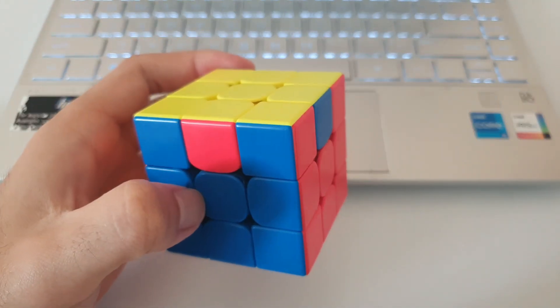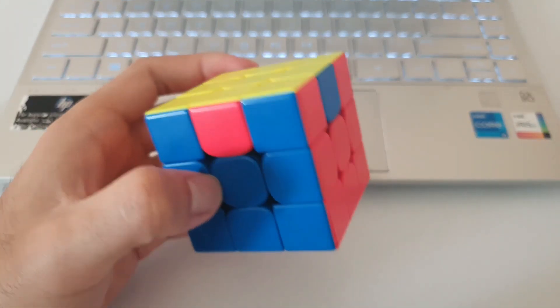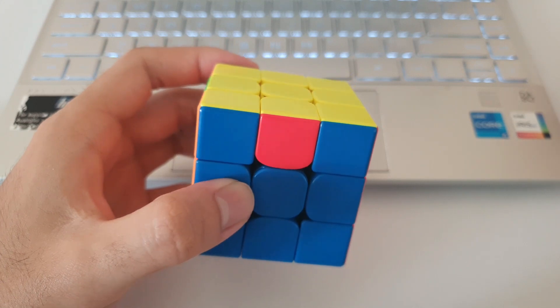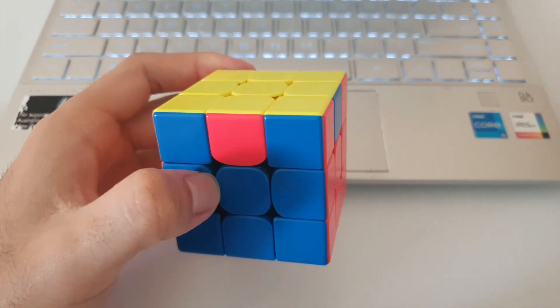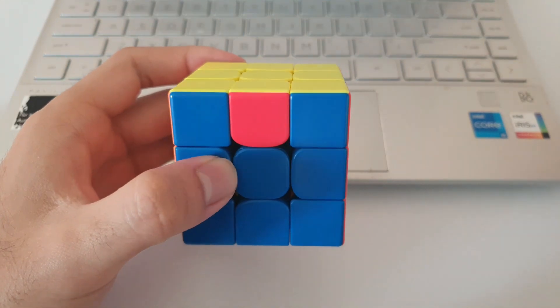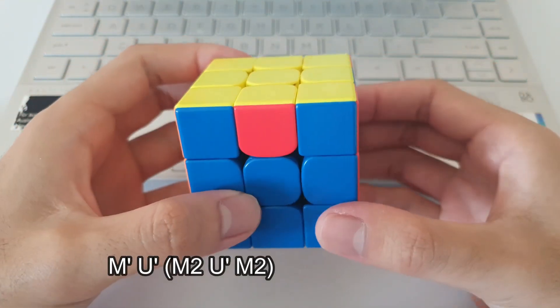Alright, so today we'll be going through the Z perm. There's a couple of good algorithms for the Z perm, the first one being the one that starts with the M prime. I'll show that right now, so it goes like this.